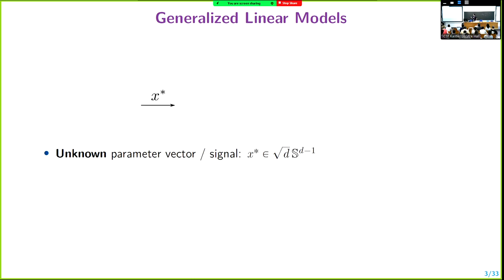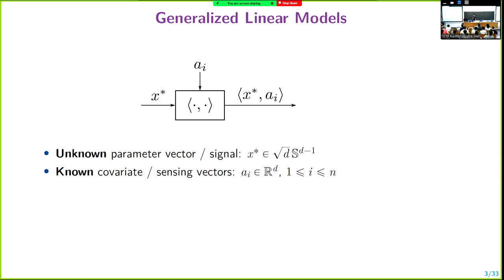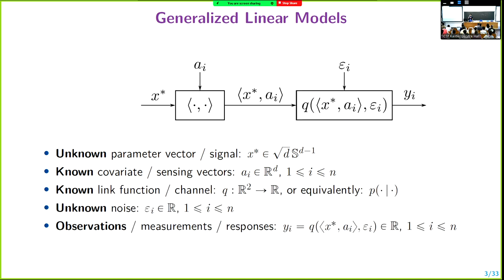Just to put things into context, this has been introduced several times, but let me do it again. Suppose we have some unknown parameter x star that we want to estimate, let's say in dimension d. For normalization purposes, it has norm square root d, and we don't directly observe this, but we instead get a linear measurement of that via some covariate vector a_i, and then it's passed through certain nonlinear function q with some noise epsilon_i.